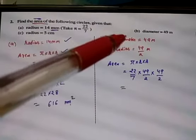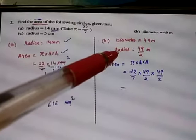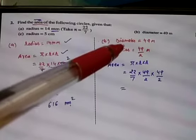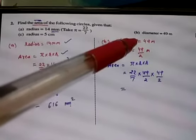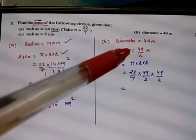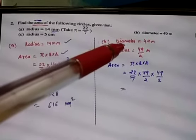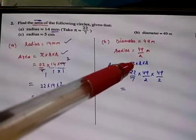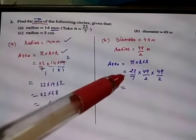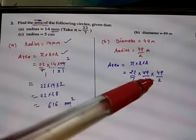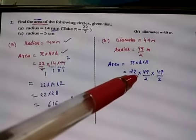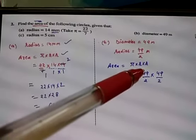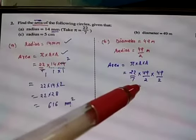For part b, the diameter is given as 49. Radius is equal to diameter divided by 2, so radius = 49/2. Half of the diameter gives the radius. Area = πr² = 22/7 into 49/2 into 49/2. Simplify: 7 ones are 7, 7 sevens are 49. Then multiply the remaining values to get the answer.